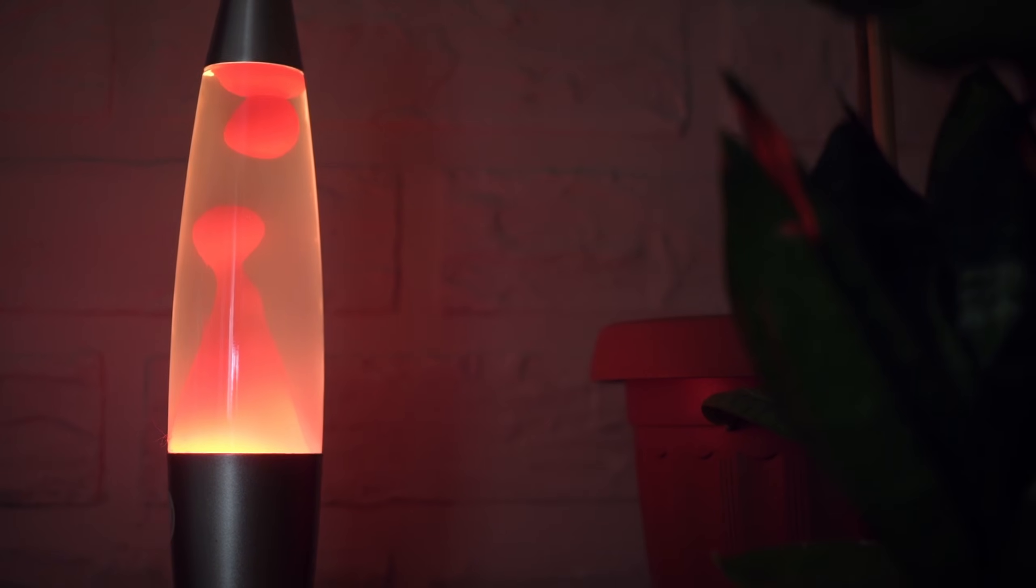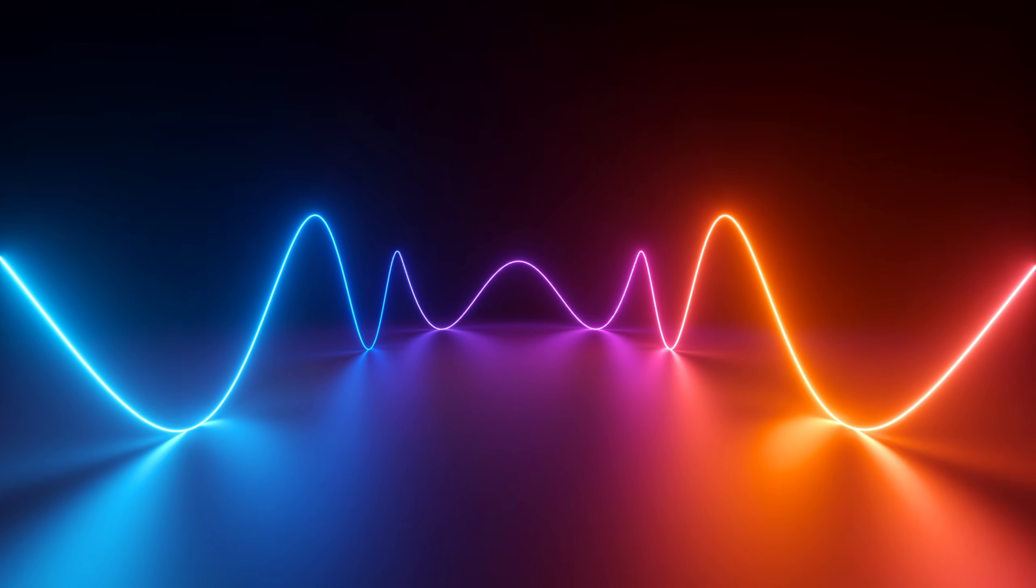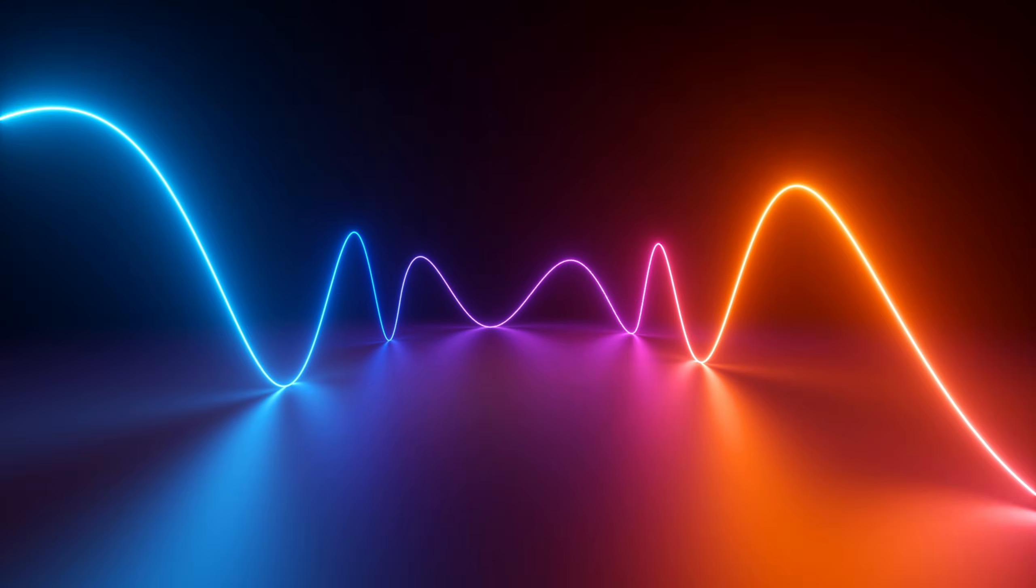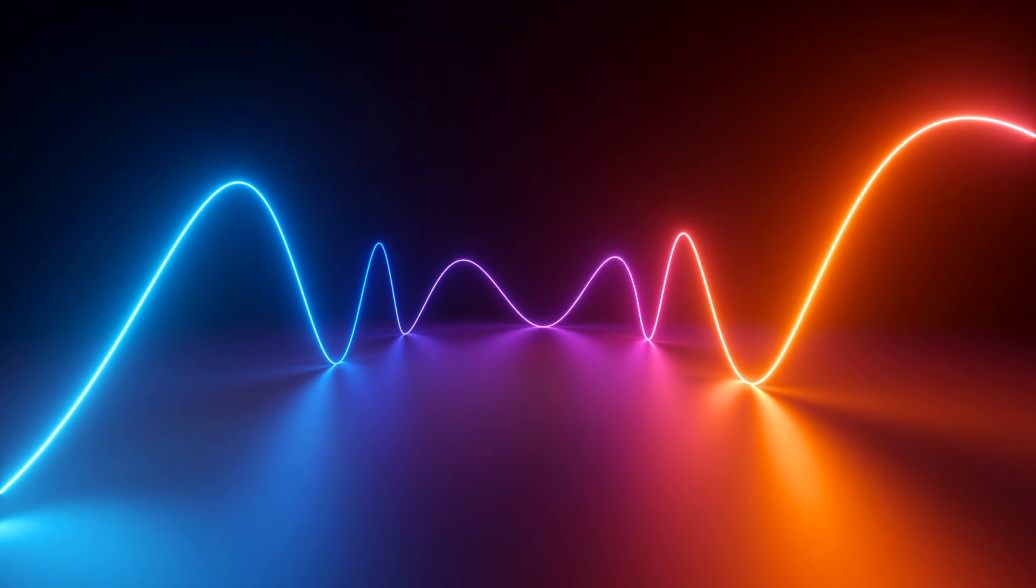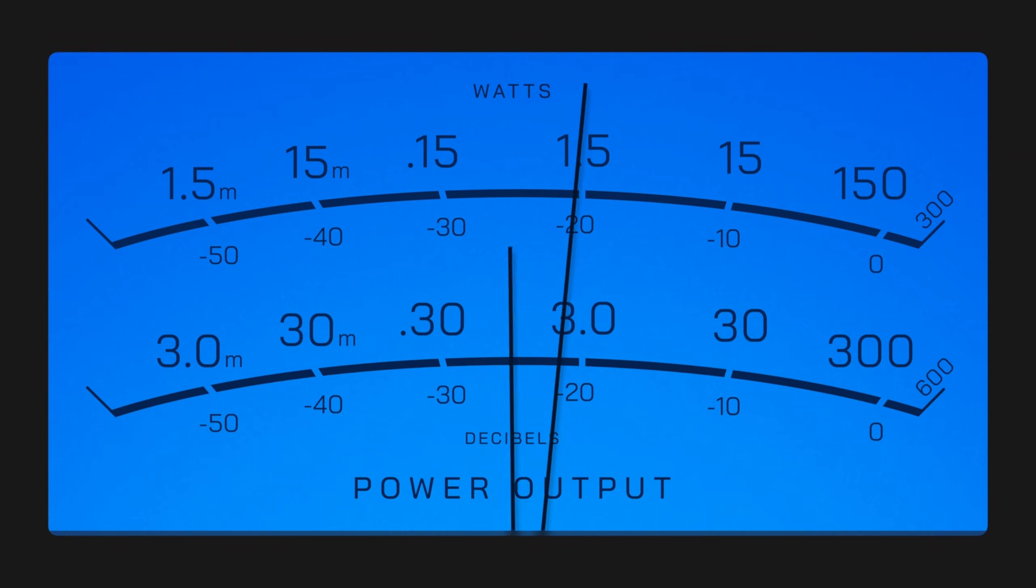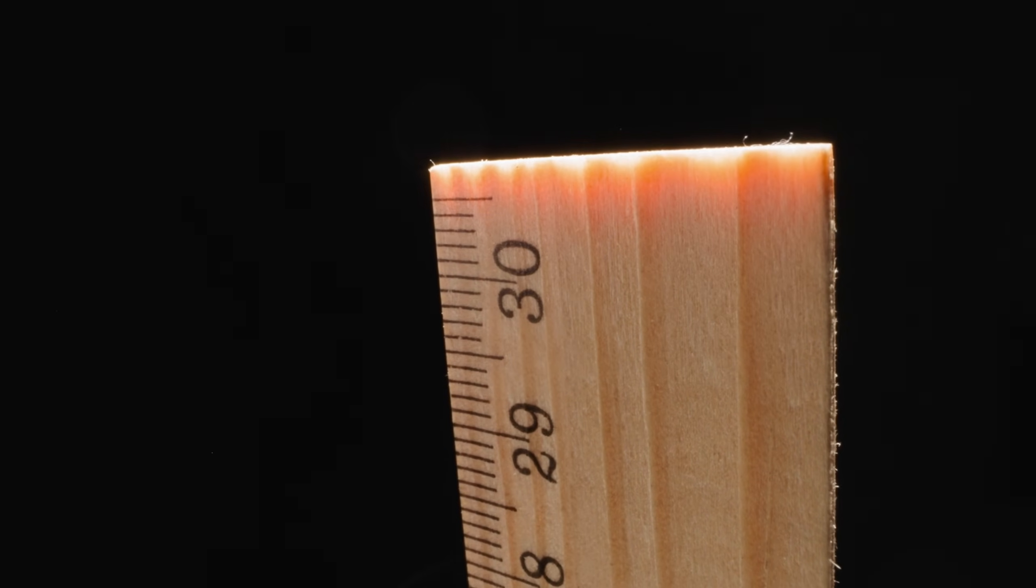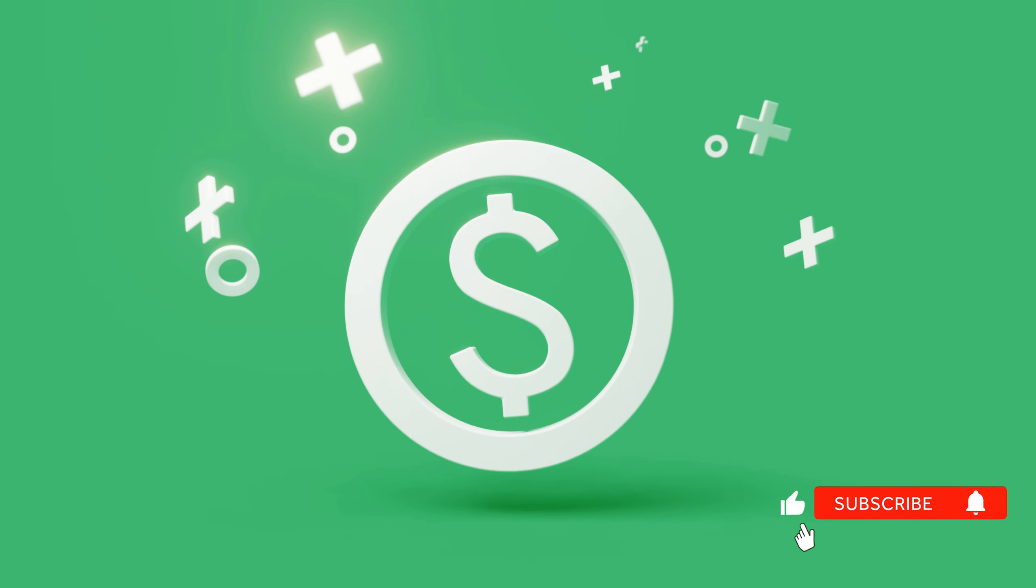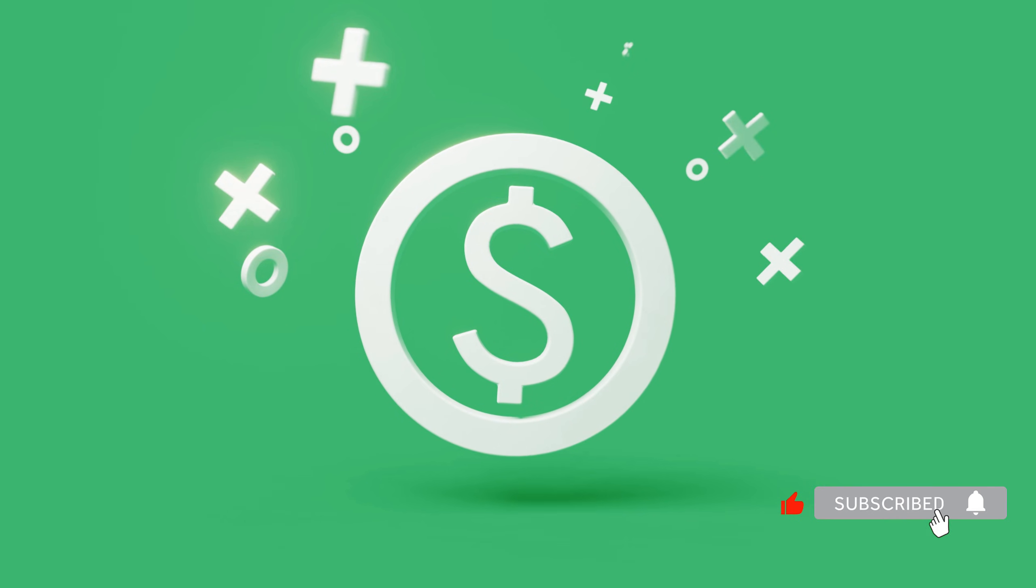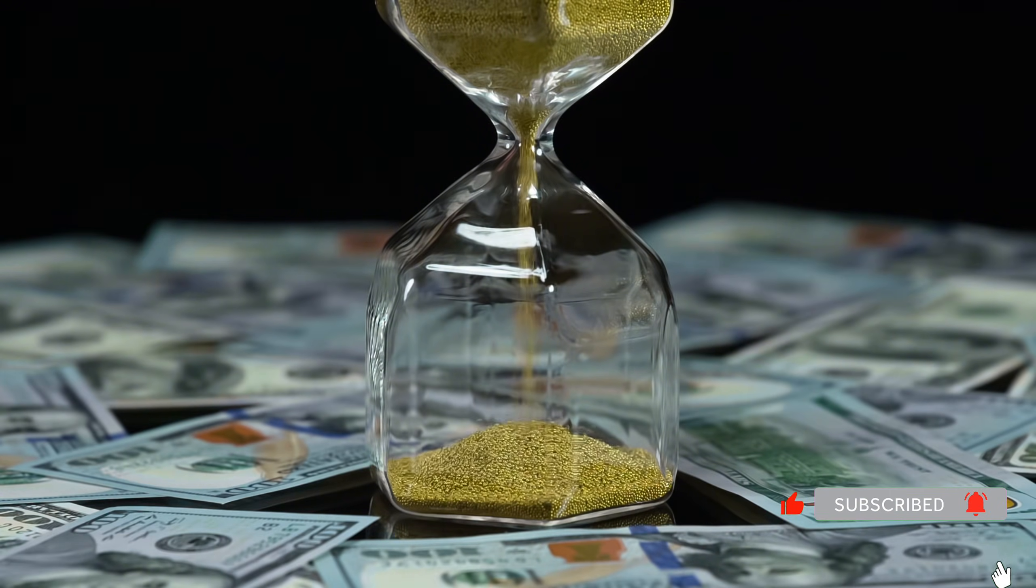If you can't get consistent morning sun, use a red light therapy device. Look for 660 and 850 nanometer wavelengths specifically. Power output between 10 and 30 milliwatts per square centimeter. Sit 6 to 12 inches away. 10 minutes in the morning. Close your eyes or look slightly to the side. The light penetrates easily through your eyelids. Medical grade devices cost $200 to $500. Worth it if this becomes part of your routine.